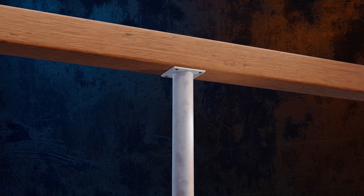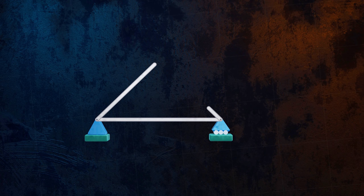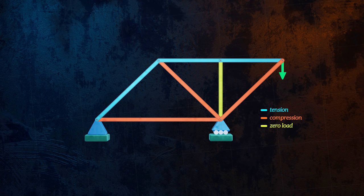Even without knowing anything about Euler's formula, it's intuitively quite obvious that slender columns are at much greater risk of buckling than stocky ones. It's why you would never design a truss structure with long compressive members like this.